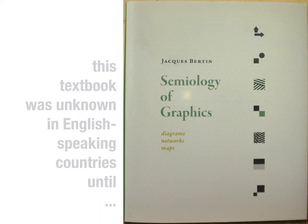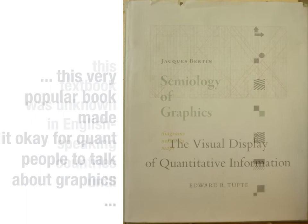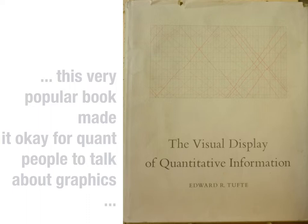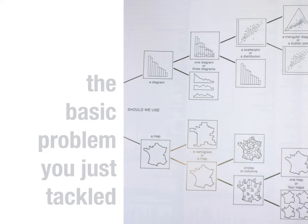So presumably you have finished your picture. I'd like to talk to you a little bit about this book, Semiology of Graphics by Jacques Bertin. This was unknown in English-speaking countries until the very popular book Visual Display of Quantitative Information made it acceptable for quantitative people to talk about graphics. Since then, the Semiology of Graphics has been translated into English a couple of times.